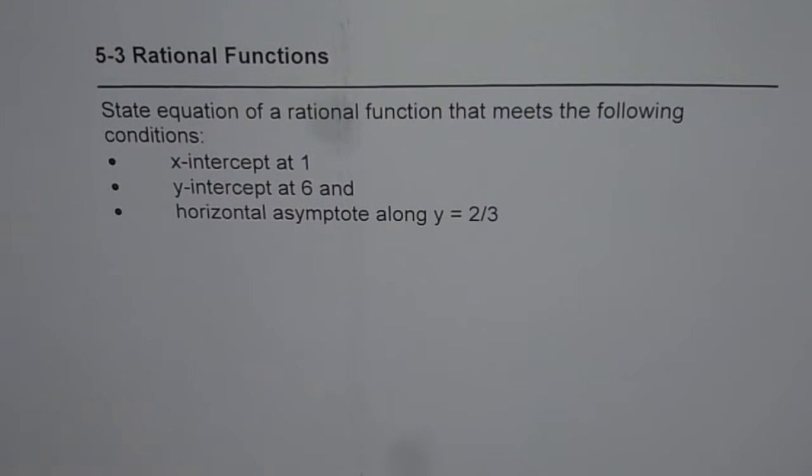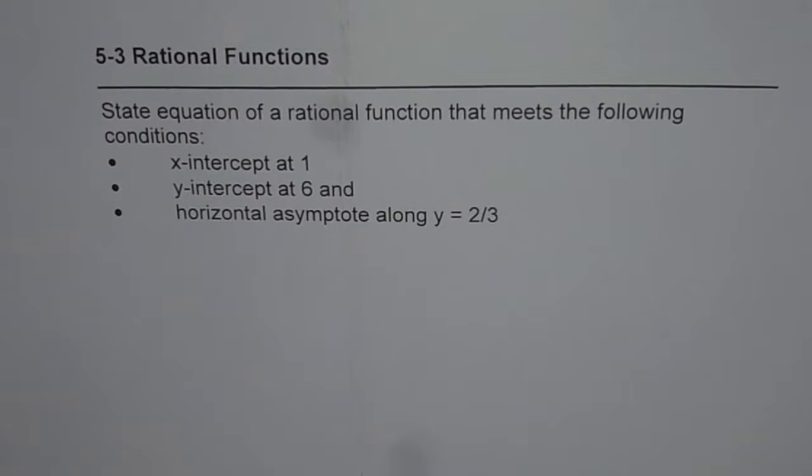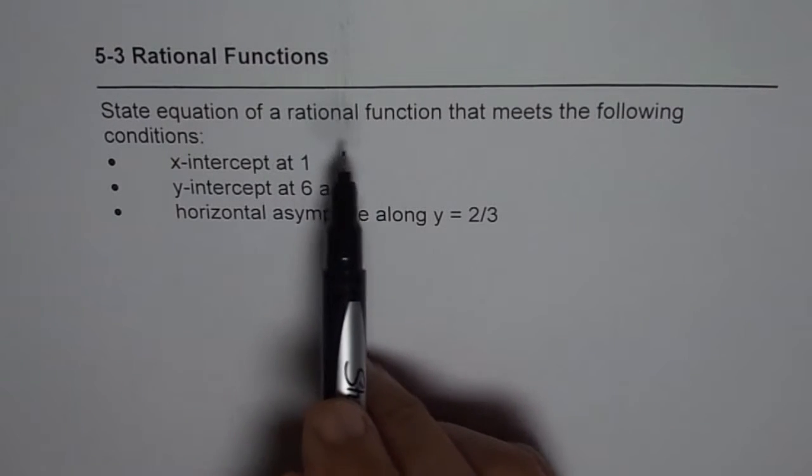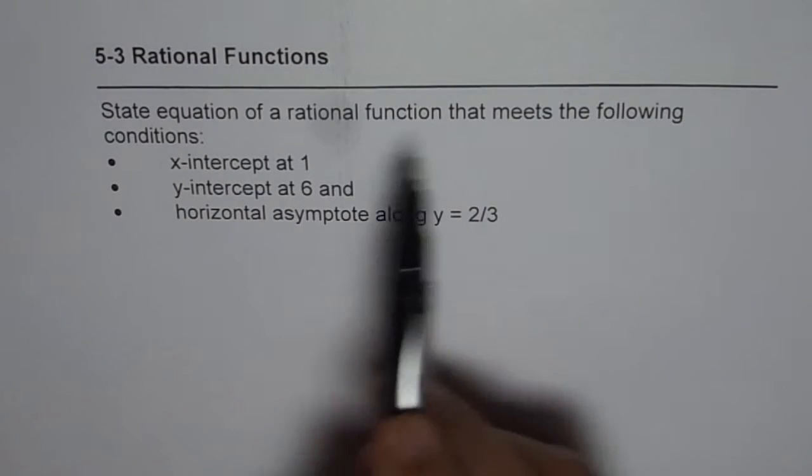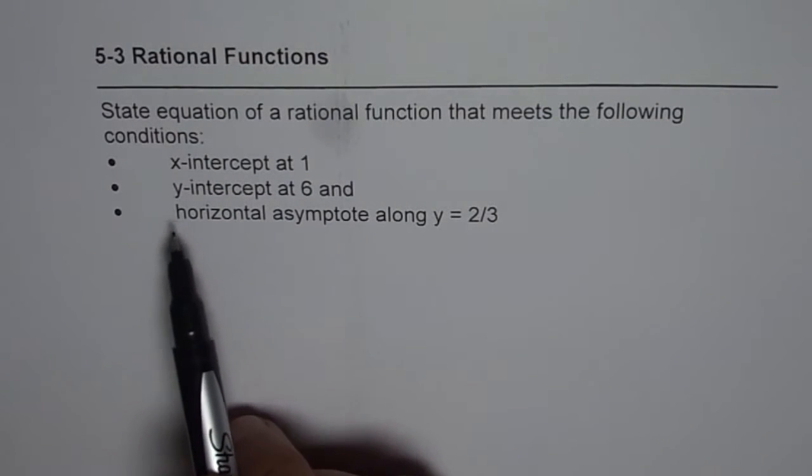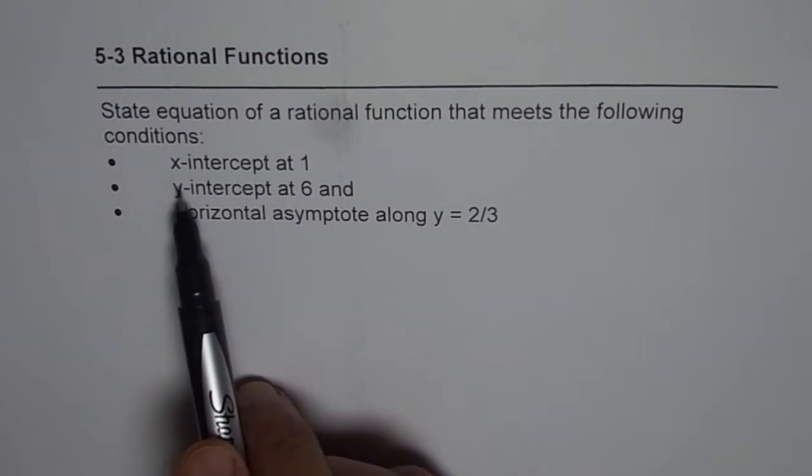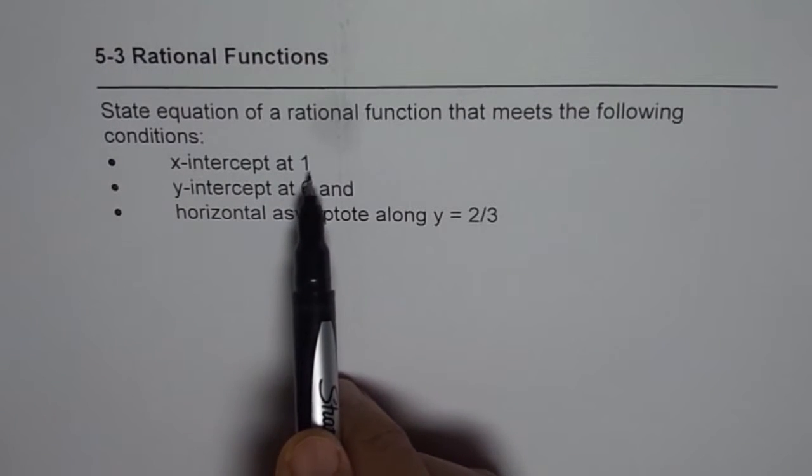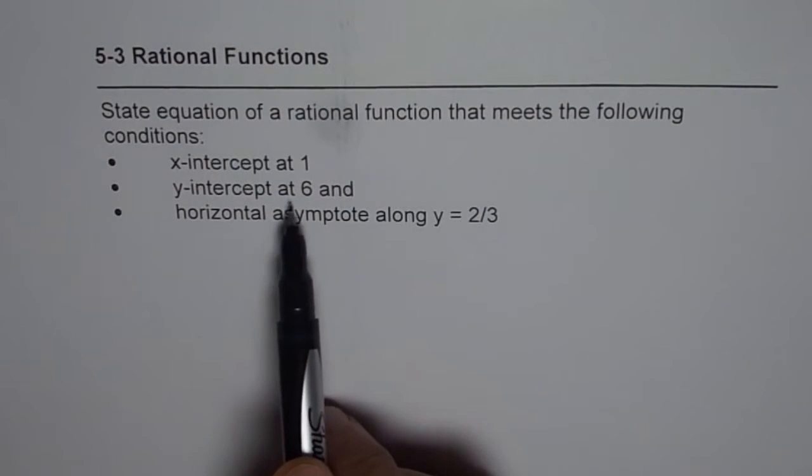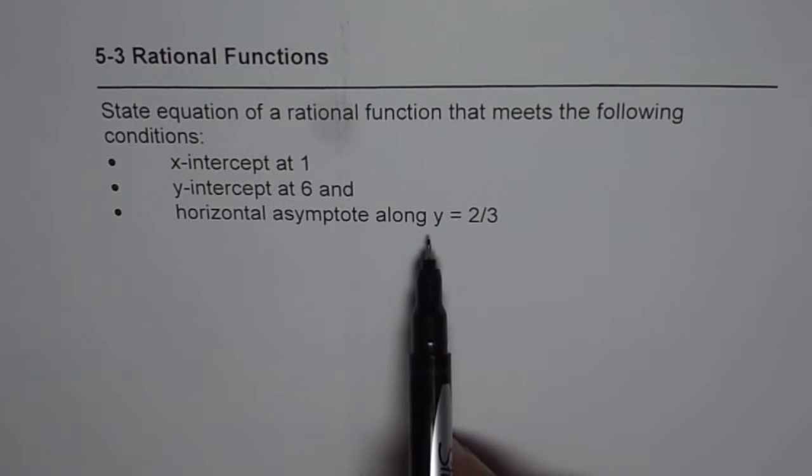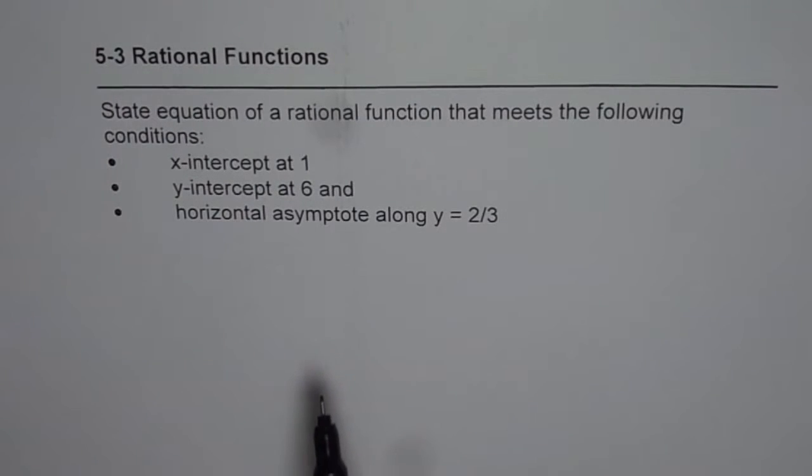I am Anil Kumar and in this video I will work out a method so that from the given conditions we can easily find the rational function. The question here is, state equation of a rational function that meets the following conditions. We are given three conditions: first, x-intercept at 1; second, y-intercept at 6; and horizontal asymptote along y equals 2 over 3.